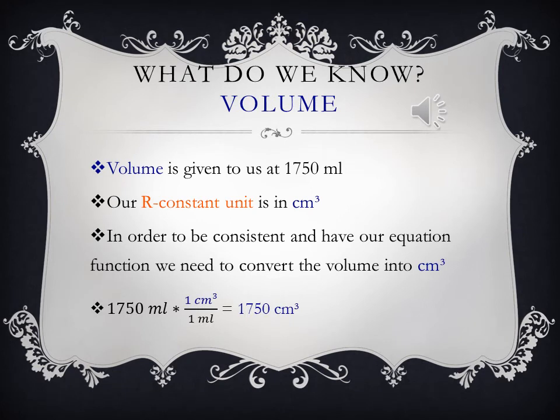Let's take a look at volume. Volume was given to us at 1,750 milliliters. However, our R-constant unit is in terms of centimeters cubed. In order to be consistent and have our equation function and cancel terms, we will need to convert the volume into centimeters cubed. This is accomplished through basic stoichiometry. We take 1,750 milliliters and multiply it by 1 centimeter cubed over 1 milliliter, we will get 1,750 centimeters cubed.